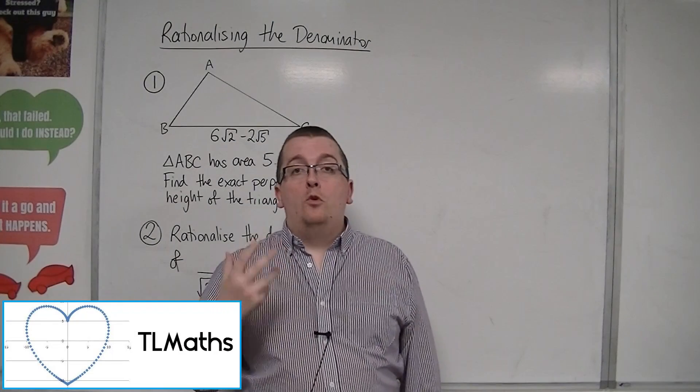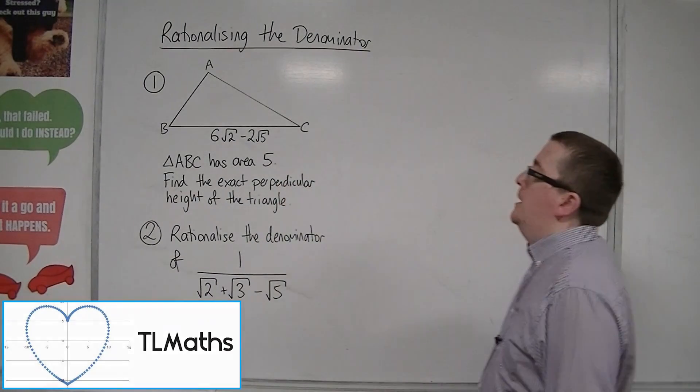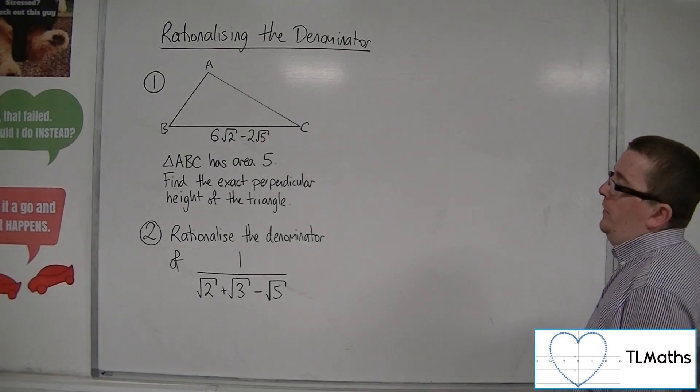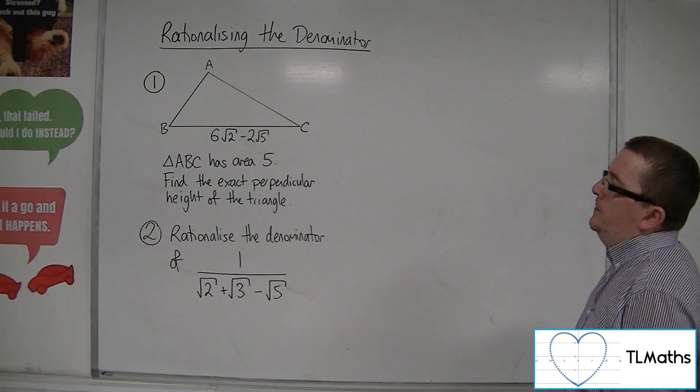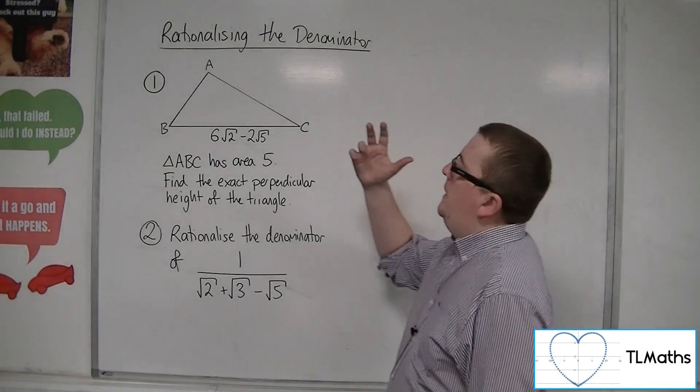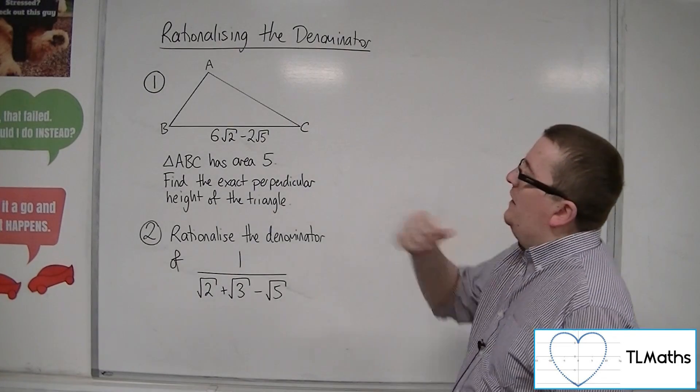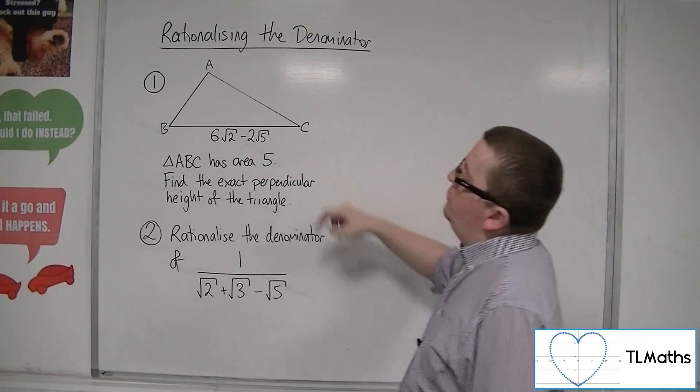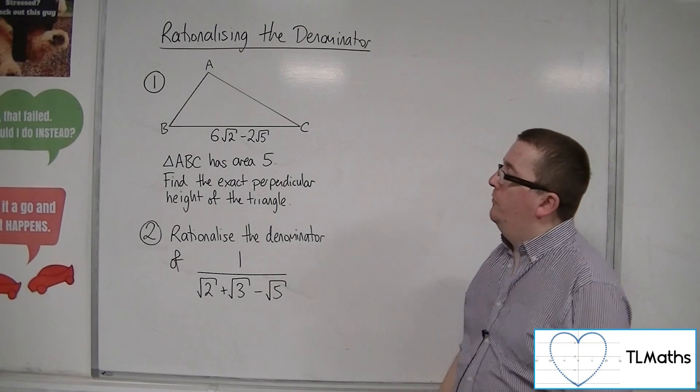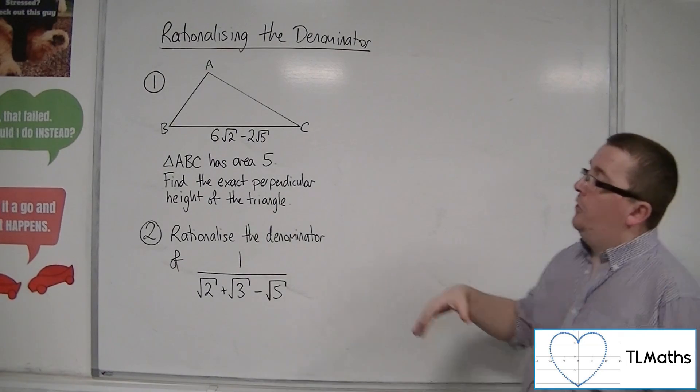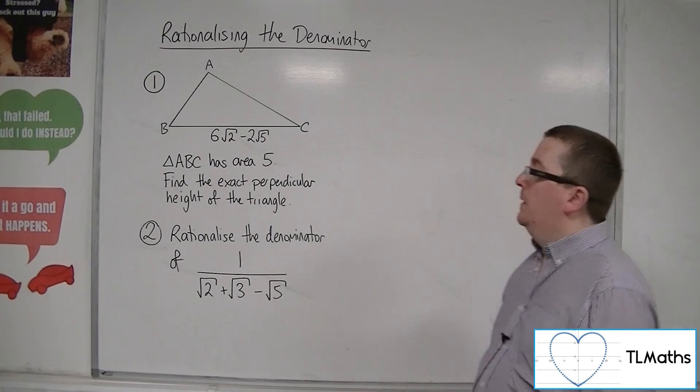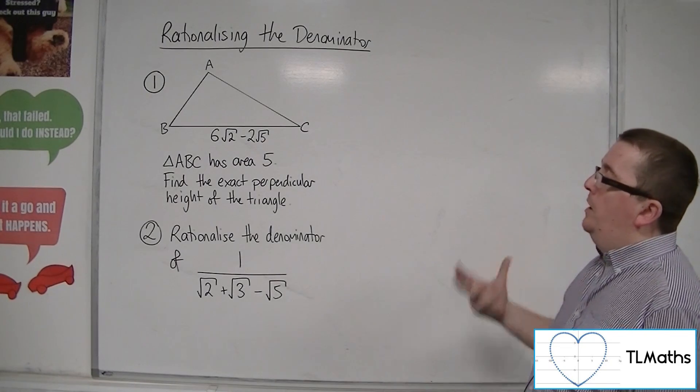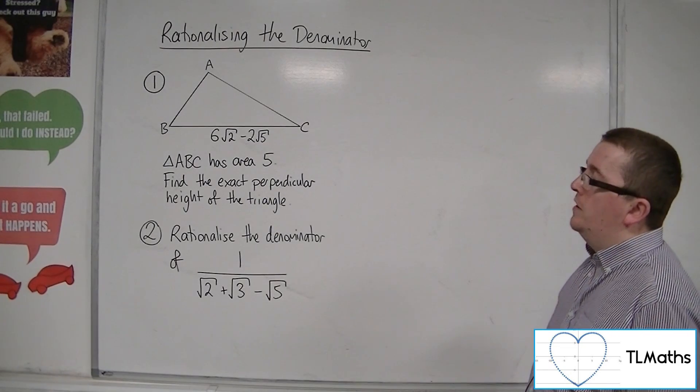Let's look at a couple of more complicated looking rationalize the denominator problems. So here we've got a triangle ABC. It's got a base length of 6 root 2 take away 2 root 5. We're also told that the area of the triangle is 5. Find the exact perpendicular height of the triangle.